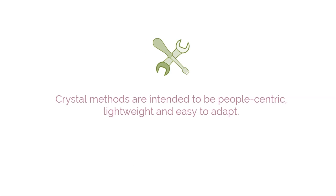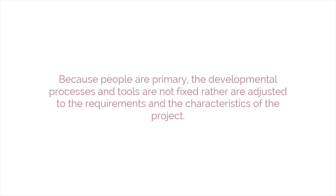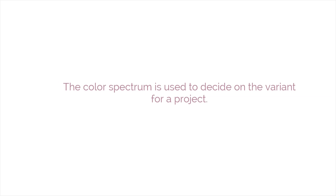The third method is Crystal Methods. Crystal methods are intended to be people-centric, lightweight, and easy to adapt. Because people are primary, the developmental processes and tools are not fixed; rather, they are adjusted to the requirements and characteristics of the project. The color spectrum is used to decide on the variant for a project. Factors such as comfort, discretionary money, essential money, and life play a vital role in determining the weight of the methodology, which is represented in various colors of the spectrum.